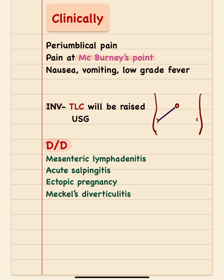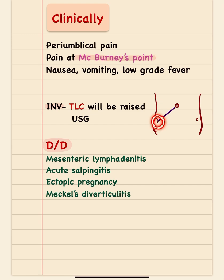The inflammation causes pain, which is the most important symptom. The pain initially appears in the periumbilical region but later becomes localized to the McBurney's point — the junction between the right one-third and left two-thirds of a line drawn from the umbilicus to the anterior right superior iliac spine. There will be pain and tenderness at McBurney's point, which is a very important diagnostic feature.